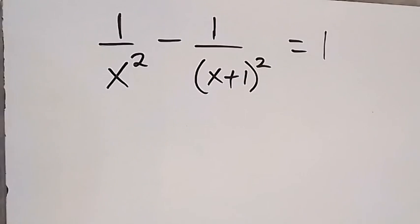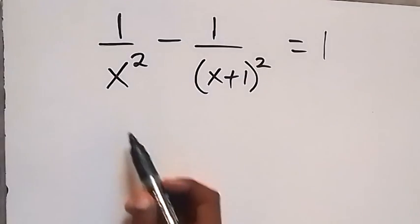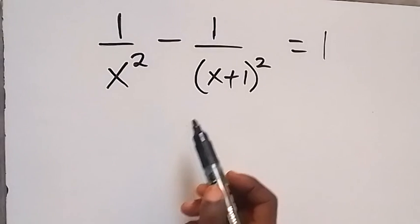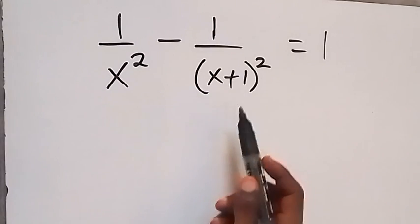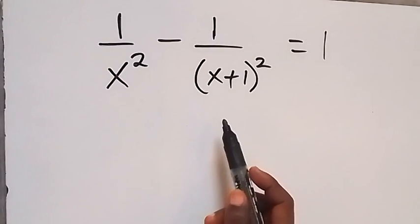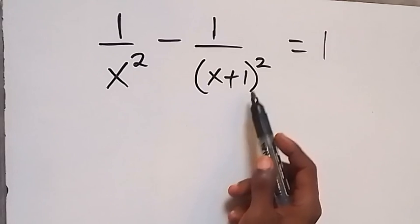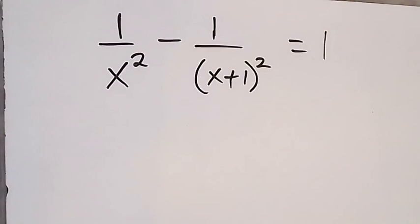Hello, how to solve this problem? 1 over x squared minus 1 over bracket x plus 1 squared equals to 1.